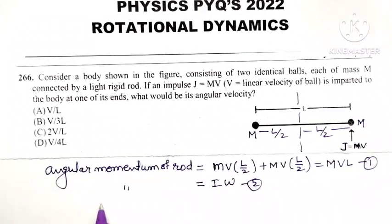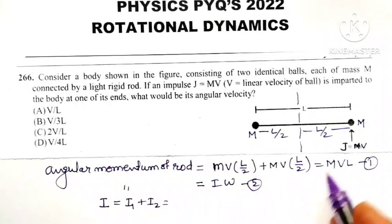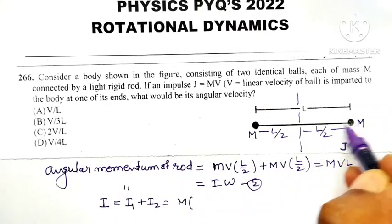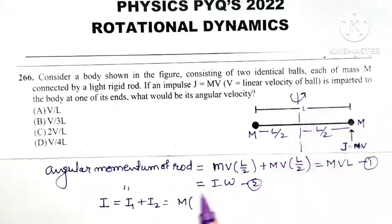Now we can find the moment of inertia of the system of two particles. It is moment of inertia of first particle plus moment of inertia of second particle. What is the moment of inertia of first particle? M into square of distance from the axis of rotation. The distance is L by 2 whole square.